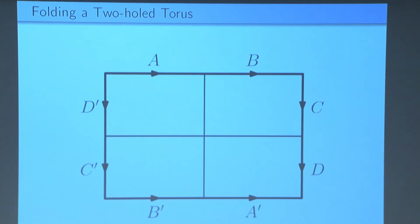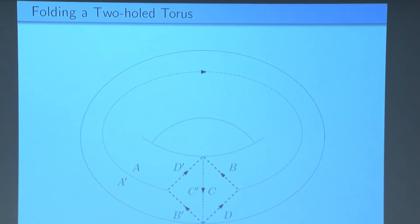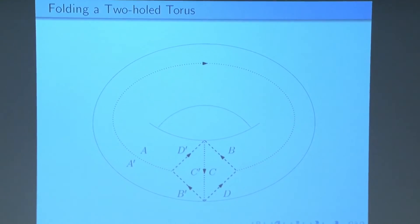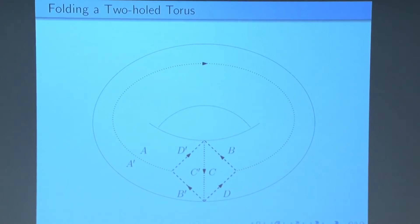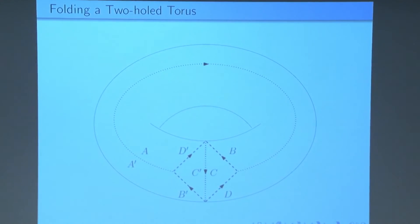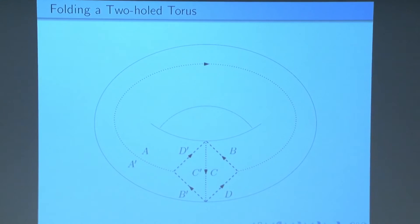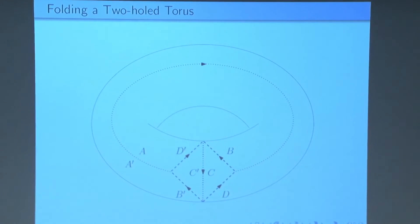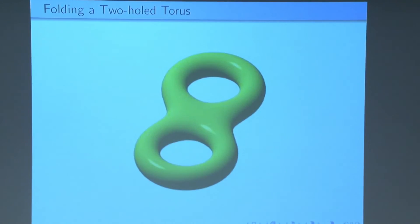So now if we glue a to a prime and c to c prime, you can see with a bit of effort, I guess, that you get a torus with a square cut out of it. And then if you glue b to b prime, you get a torus with two disks cut out of it, which are bounded by d and d prime. Then you glue d and d prime together, and you get a two-hole torus as we expected.